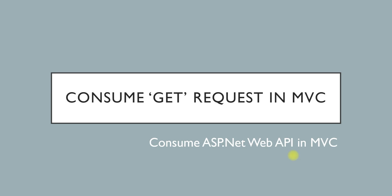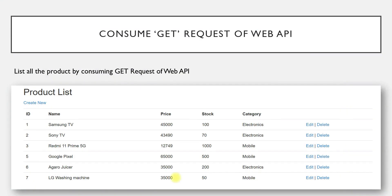Hello friends, welcome to Code Semantic and welcome to the video tutorial of ASP.NET Web API. In this video, we are going to see how we can consume a GET request of Web API in an MVC application. In the last video we already saw how to set up an MVC application to consume a Web API, so if you are not aware of that part, I suggest you watch that video first. The link is attached in the description below. Our final MVC application output will look like this — whenever we consume our GET request, the data returned will be displayed in tabular format on our MVC page.